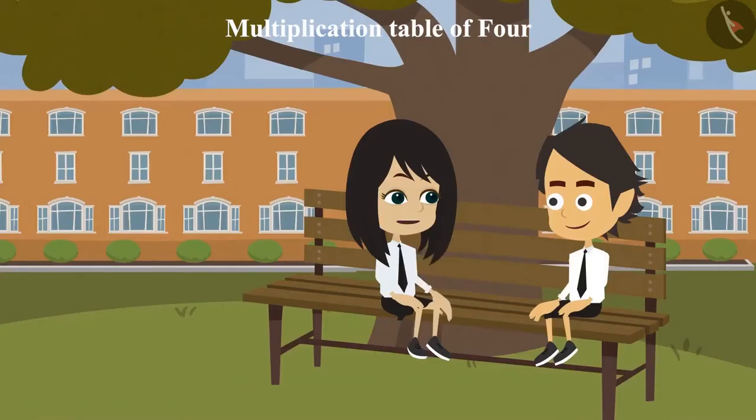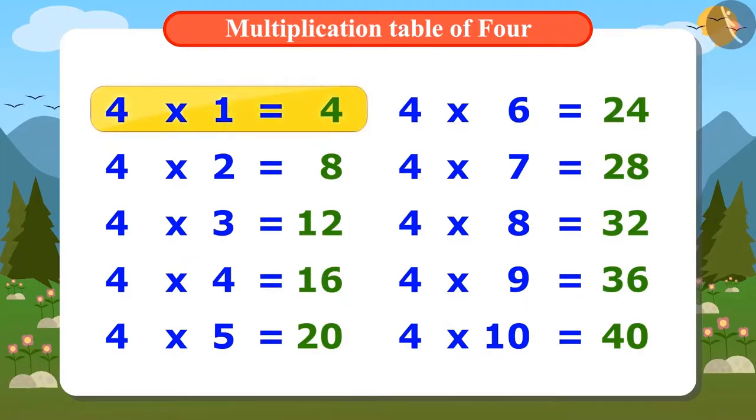4 ones are 4, 4 twos are 8, 4 threes are 12, 4 fours are 16, 4 fives are 20, 4 sixes are 24, 4 sevens are 28, 4 eights are 32, 4 nines are 36, 4 tens are 40.